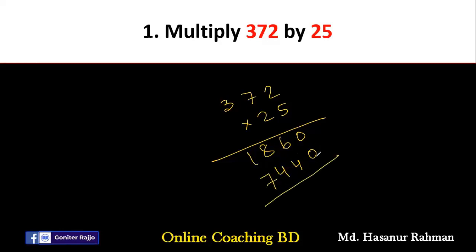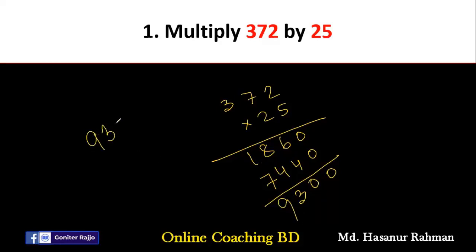Now we have to add these two numbers. 0 plus 0 is 0. 6 plus 4 is 10, carry 1 to 8, that is 9. 9 plus 4 is 13, carry 1. That is 2 plus 7, which will be 9. So the answer will be 9300.